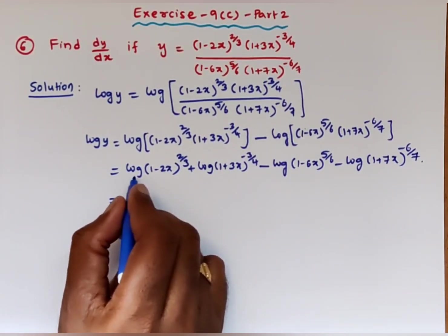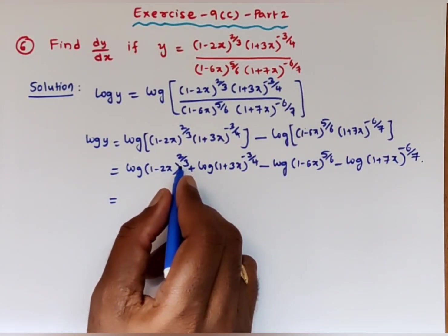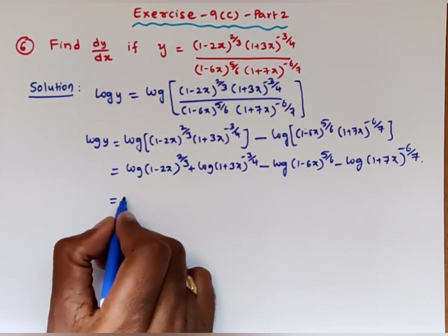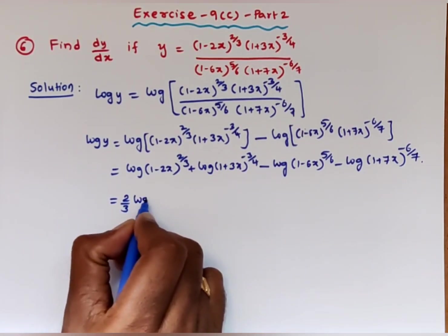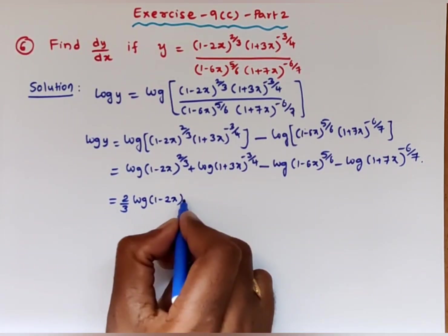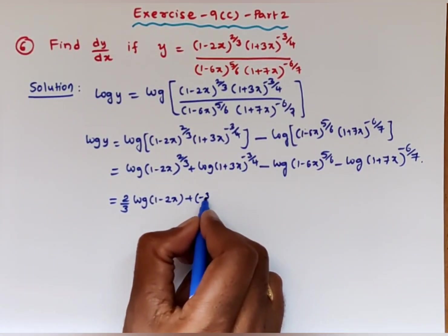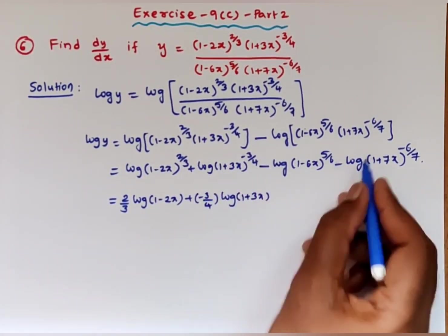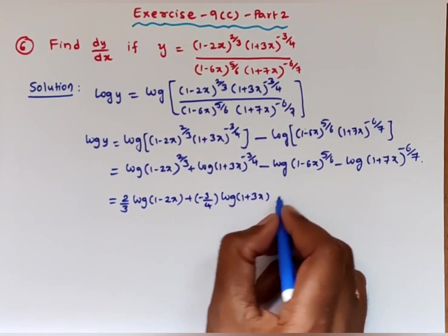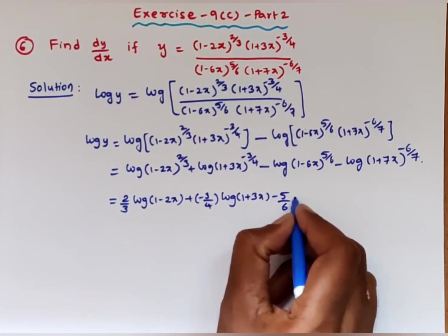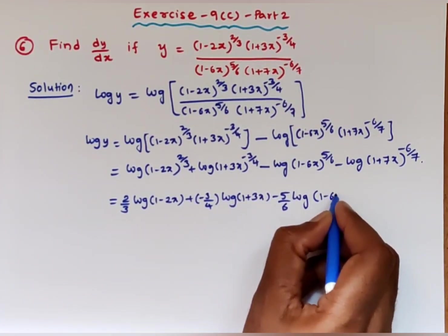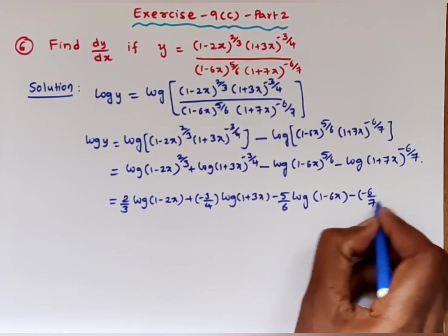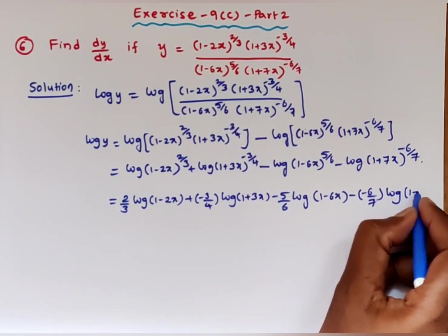Now applying the power rule of logarithms — log(x^n) = n·log(x) — this becomes: (2/3)·log(1 minus 2x) + (minus 3/4)·log(1 plus 3x) minus (5/6)·log(1 minus 6x) minus (minus 6/7)·log(1 plus 7x).